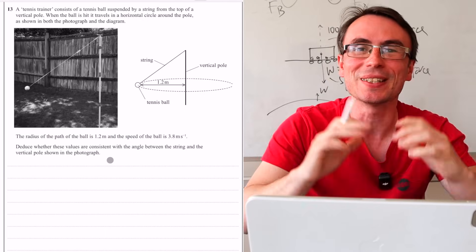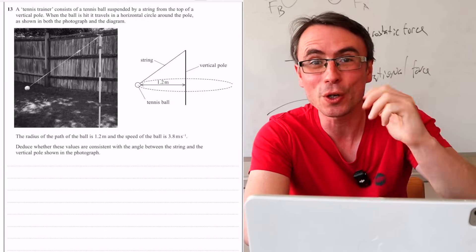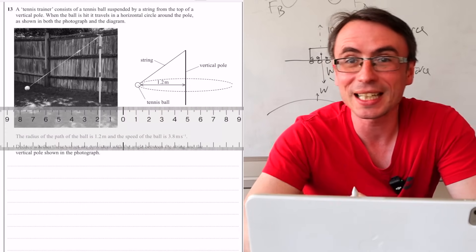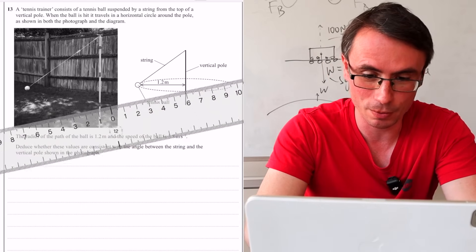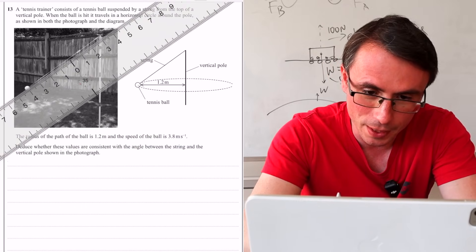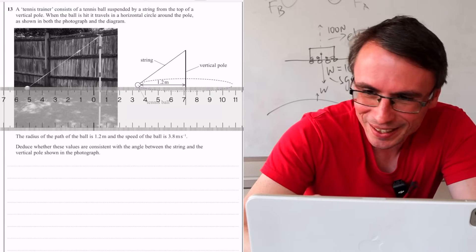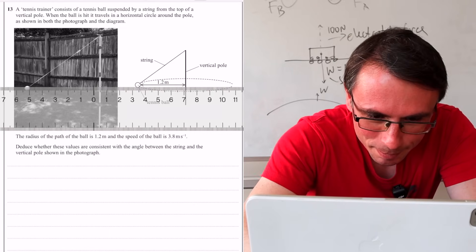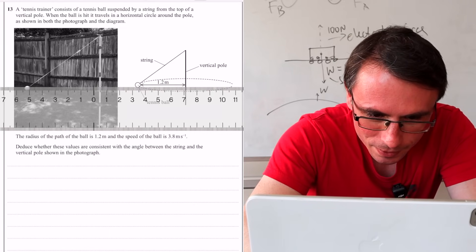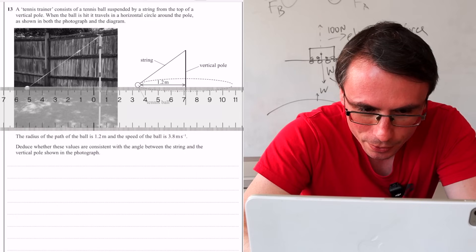And this is precisely why you need to bring a protractor for your exams in physics. Luckily for me, I think I have a virtual one in this ruler. Look how cool is that? So let's see if I can figure it out using this app. So this here is zero degrees, isn't it? Which is this horizontal line.